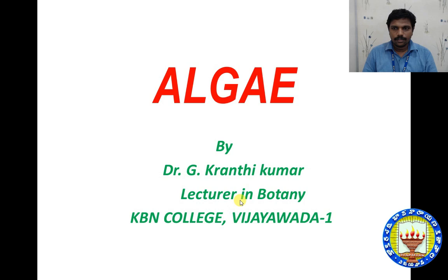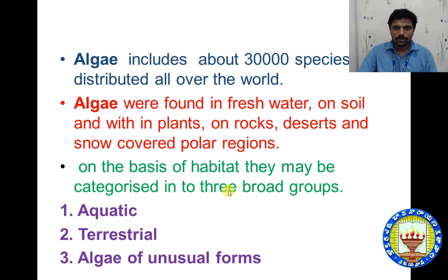Today I would like to discuss algae members. Algae are simple thaloid structures. Algae includes about 30,000 species distributed all over the world. Algae were found in freshwater, on soil and within plants, on rocks, deserts, snow covered polar regions.